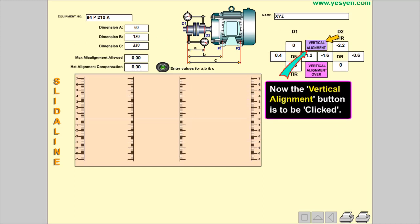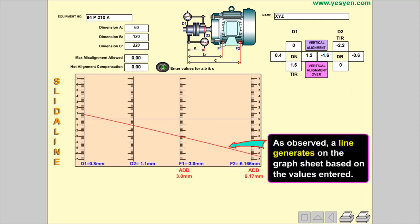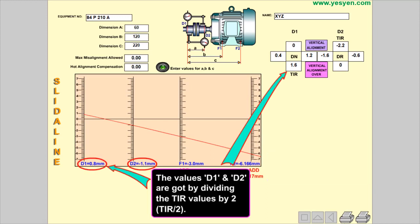Now the vertical alignment button is to be clicked. As observed, a line generates on the graph sheet based on the values entered. The values D1 and D2 are got by dividing the TIR values by 2.